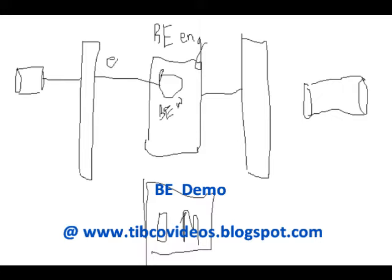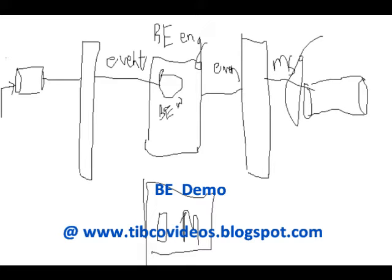Once the event enters, it will be your event. Again it will be an event, and once it enters the channel part, it converts into the message format. It will be pushed as the message. So once it enters this channel part, this is a channel, and this is also a channel. So this is the normal behavior of BE.